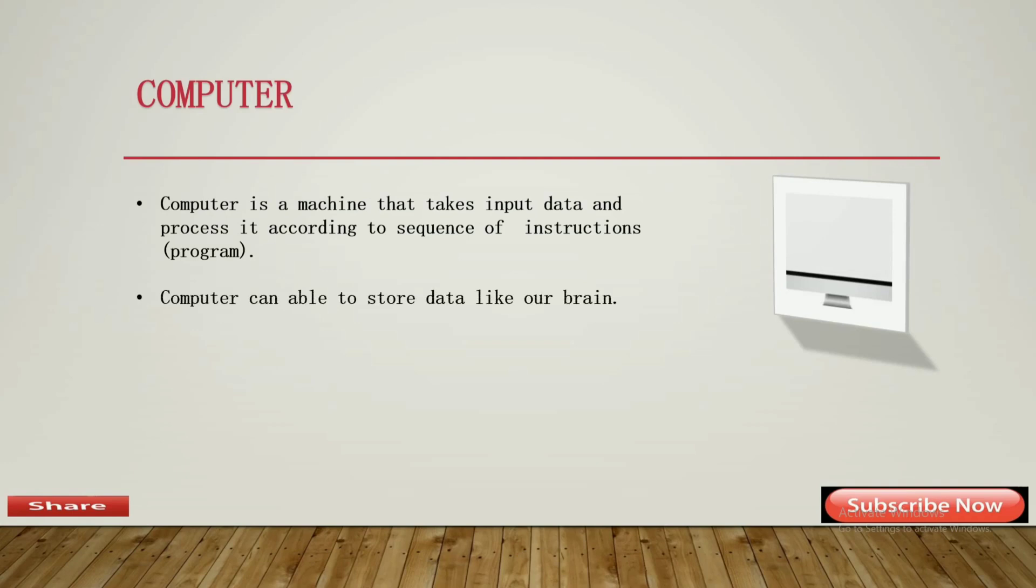Like our brains, computers can store data like images, photos, and videos. Computers can also speed up our work. Suppose you want to multiply a big number with another big number. We take a lot of time, but the computer takes a fraction of seconds. So computers are faster than us.